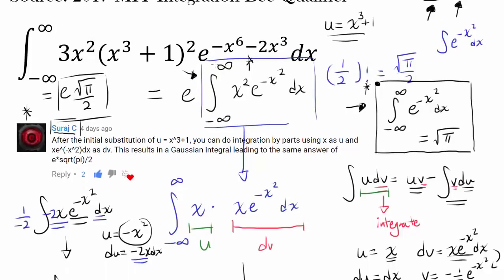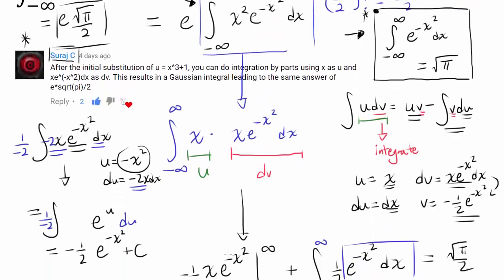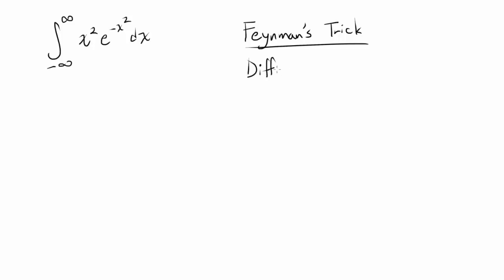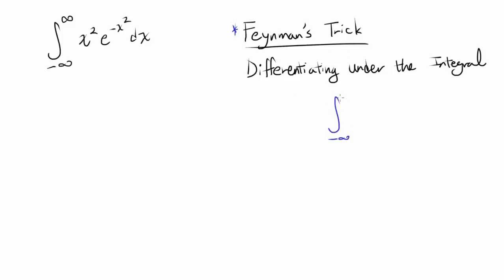Now I'm going to show you the third way of evaluating this integral from negative infinity to infinity of x squared e to the negative x squared dx. The method I'm going to show you is called Feynman's trick for evaluating integrals, also called differentiating under the integral sign. This method can be used to evaluate seemingly very difficult integrals, like the integral from negative infinity to infinity of sine of x over x dx.